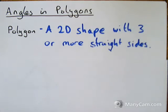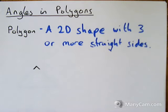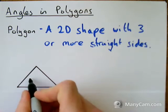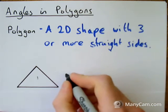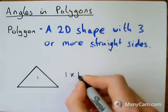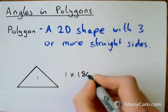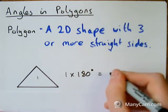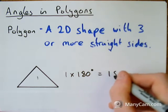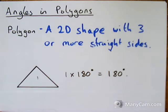I'm going to use a triangle, a quadrilateral, a pentagon and a hexagon to try and show you how we can work out the total amount of angles in a polygon. To begin with, with a triangle, there's one triangle, so one triangle has 180 degrees. We all know that in a triangle there's 180 degrees.